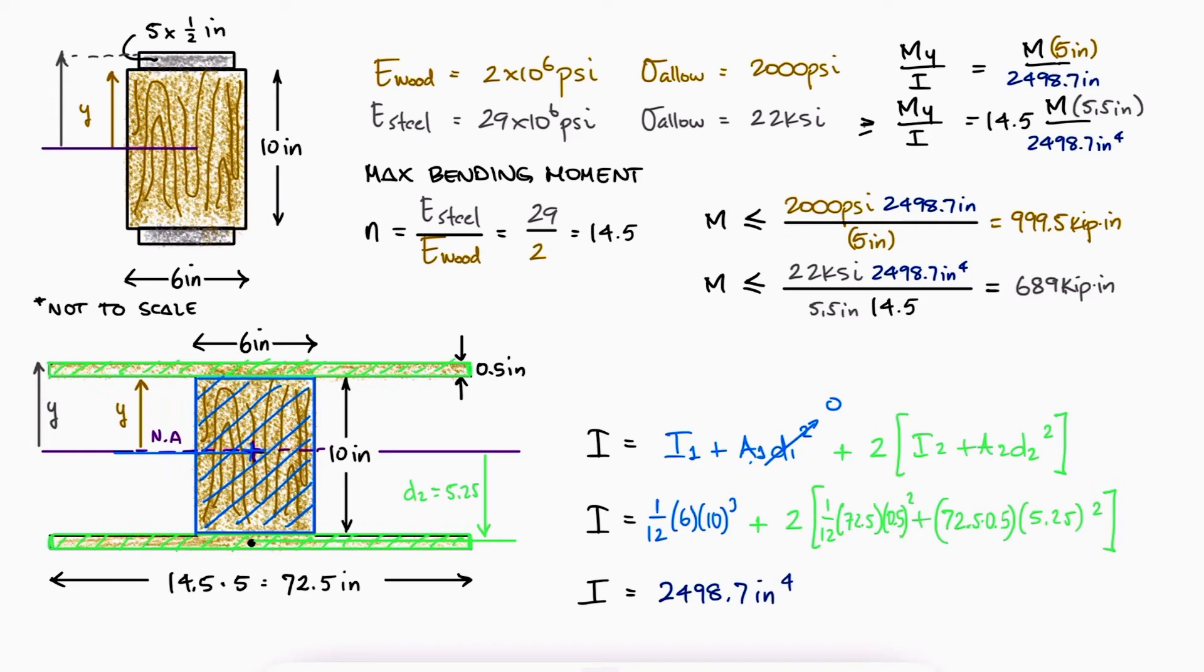Since we want neither of them to fail, the maximum bending moment is the lowest of the two.